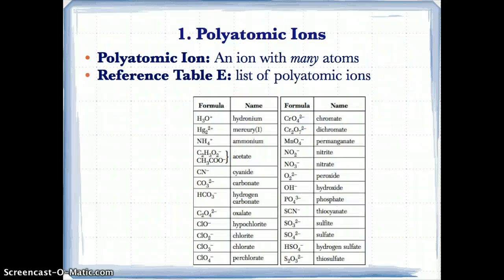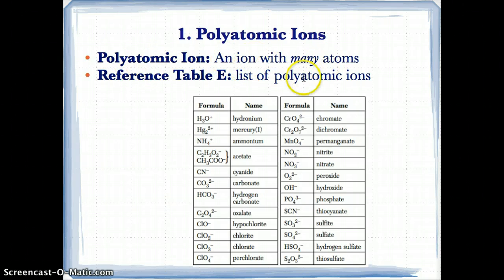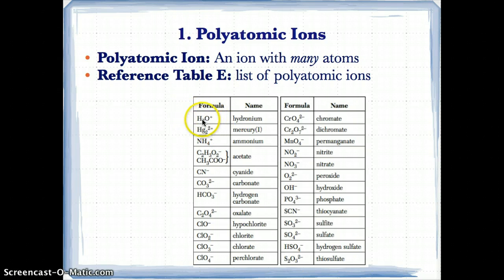Let's first start by talking about something called polyatomic ions. A polyatomic ion is an ion with many atoms. Think of polyatomic as 'poly' for many and 'atomic' as atoms. So a polyatomic ion is an ion with many atoms. Reference Table E is where you can find a list of polyatomic ions. For example, H3O+ has 4 atoms — 3 atoms of H and 1 atom of O — and this stands for the hydronium ion. It's a polyatomic ion because there are 3 hydrogens, 1 oxygen, and a charge of +1.